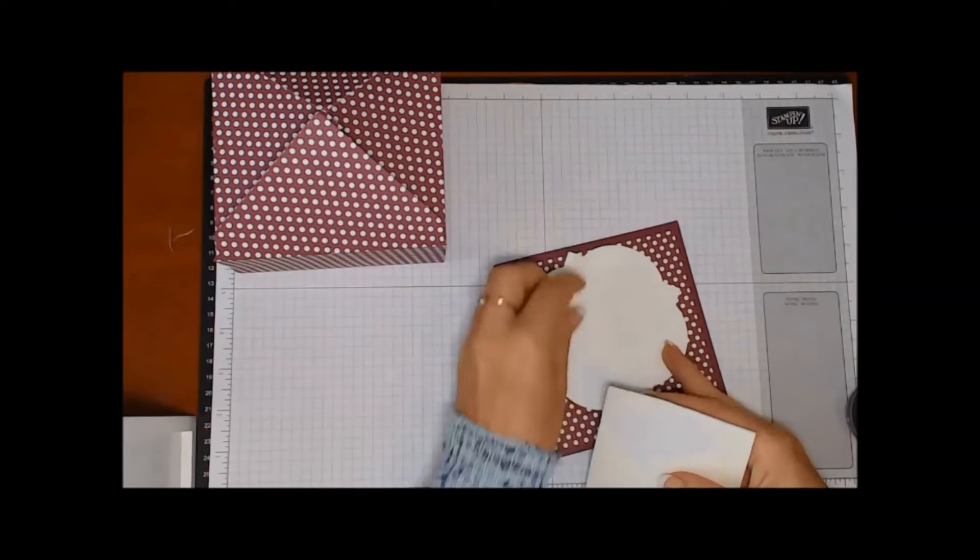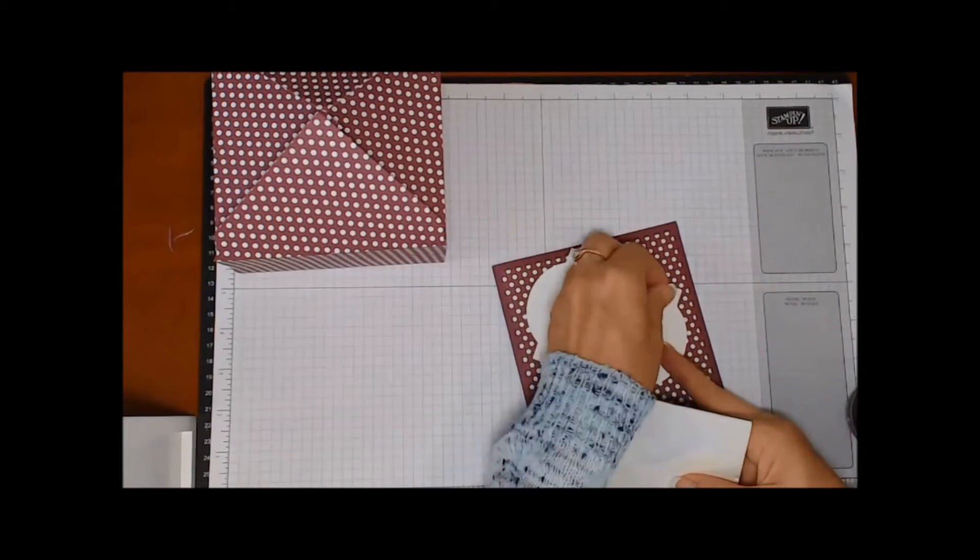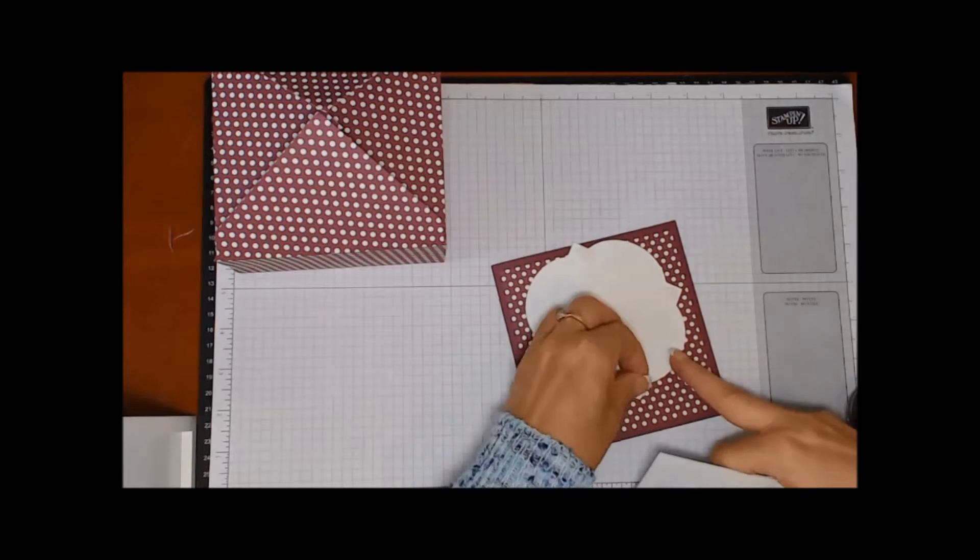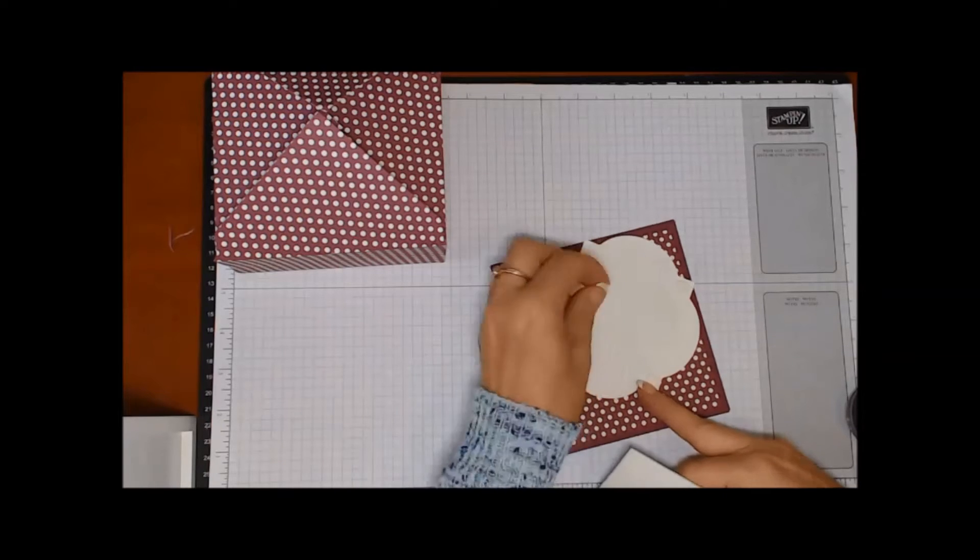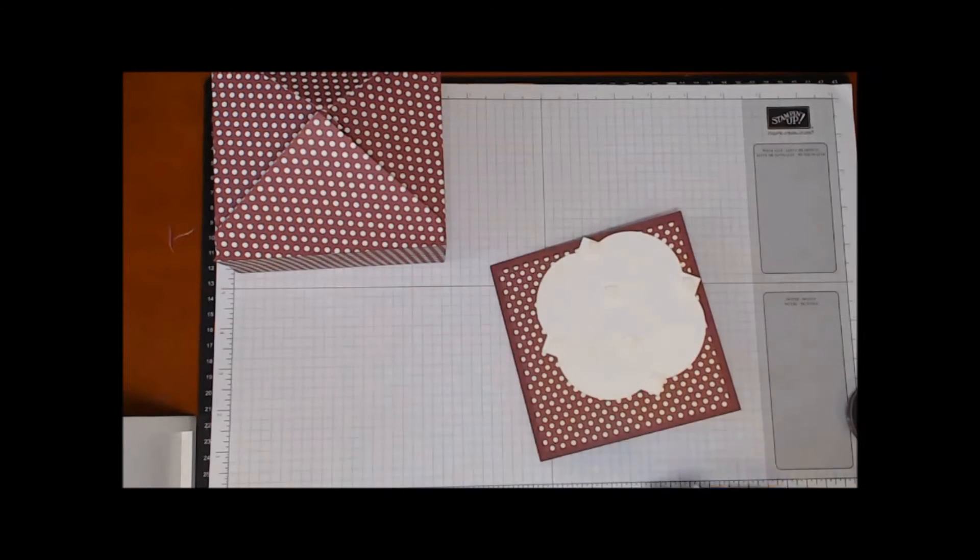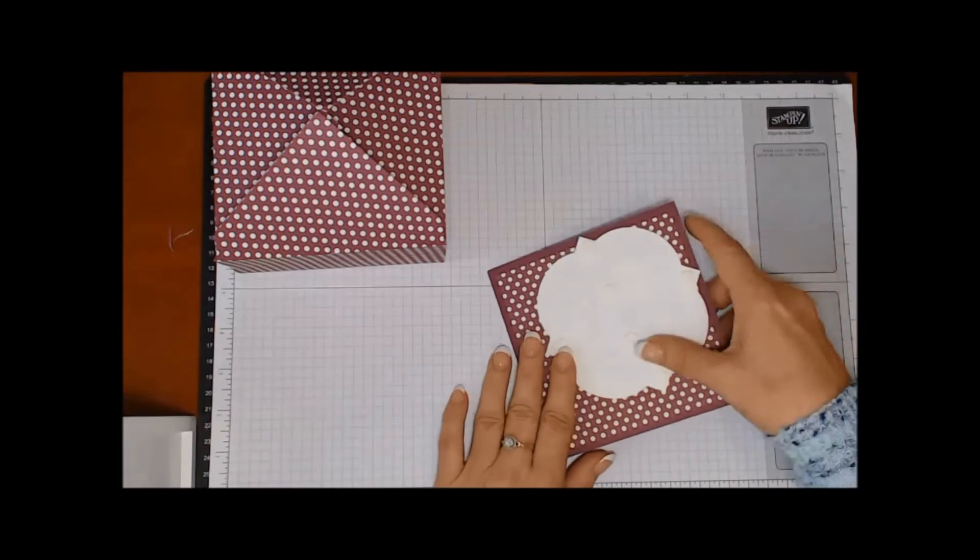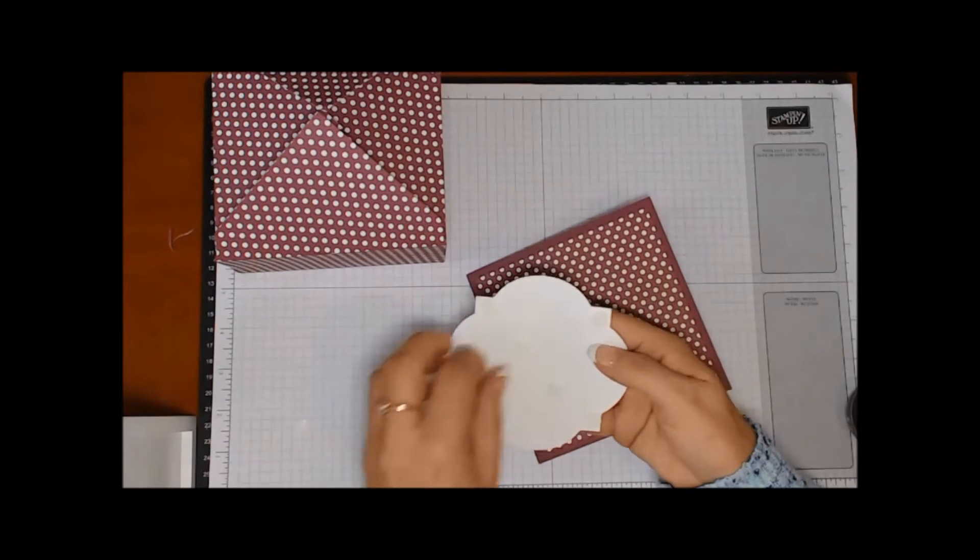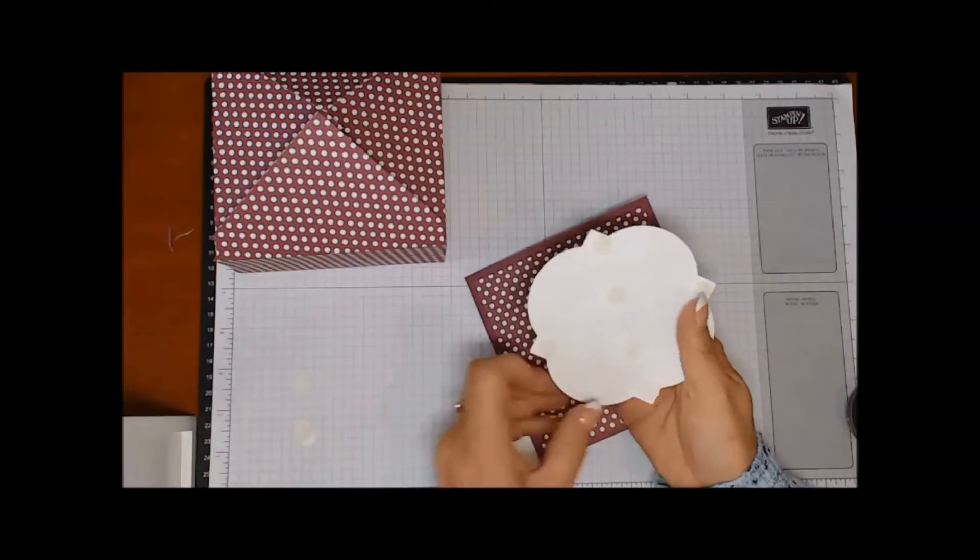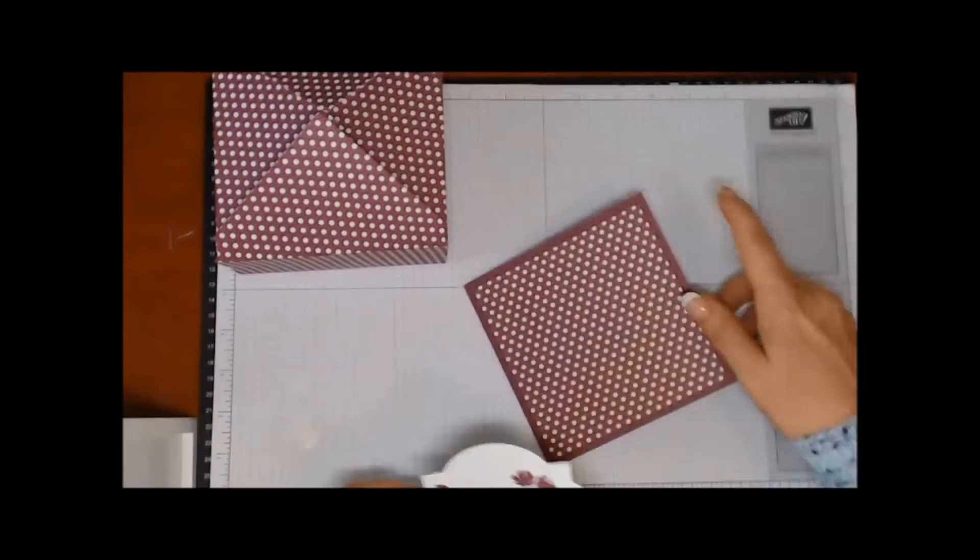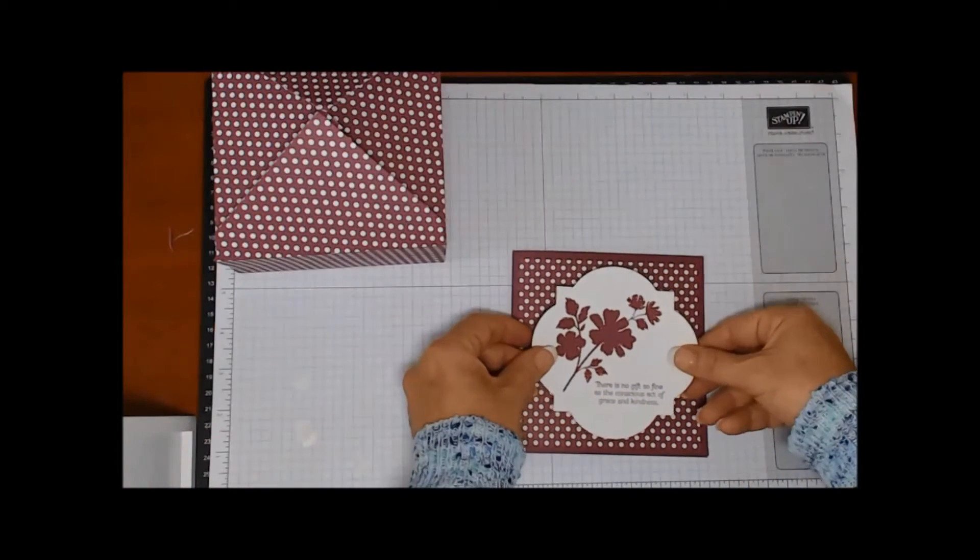So now some dimensionals are going on that focal image and I'm putting one on each corner and I'm going to put two in the middle because it's a fairly big sized framelit and I don't want it to just squish down too much. Just take those backs off. This card is going to go together pretty quickly. Then just line it up.